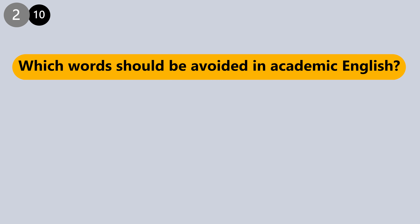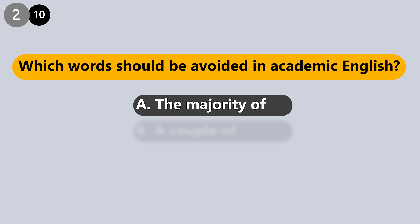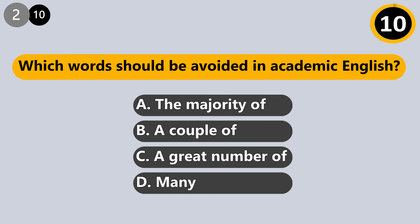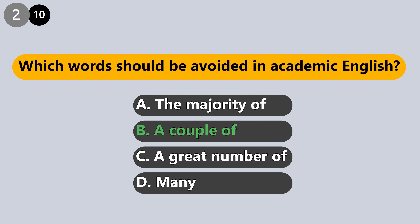Which words should be avoided in academic English? The majority of, a couple of, a great number of, or many? The answer is: a couple of. You should always specify the exact amount, or you can use appropriate synonyms like many, several, or a number of.